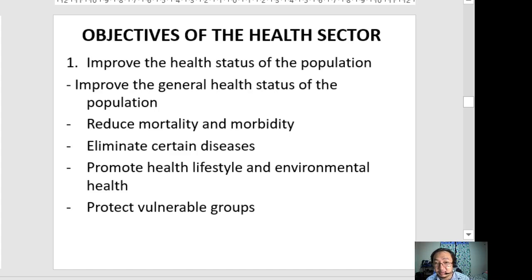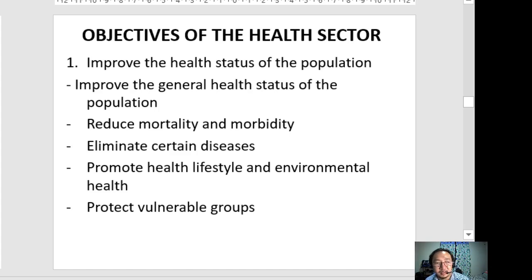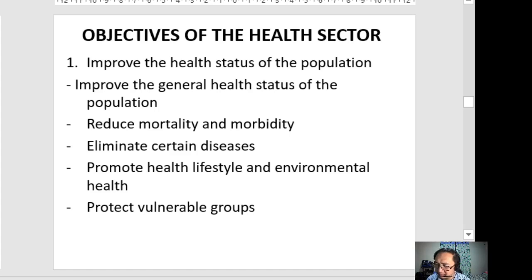The objectives include: first, to improve the health status of the general population of the Philippines — indicated by improvement in general health status, reduction of mortality and morbidity, elimination of certain infectious diseases, promotion of healthy lifestyle and environmental health, and protection of vulnerable groups. Vulnerable groups are people with special health and nutritional needs: young children, the elderly, pregnant women, and persons with disabilities.